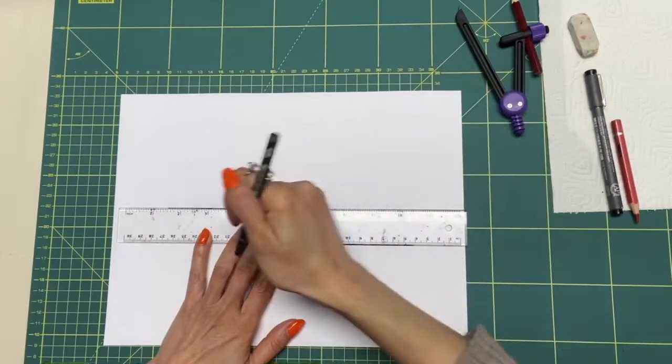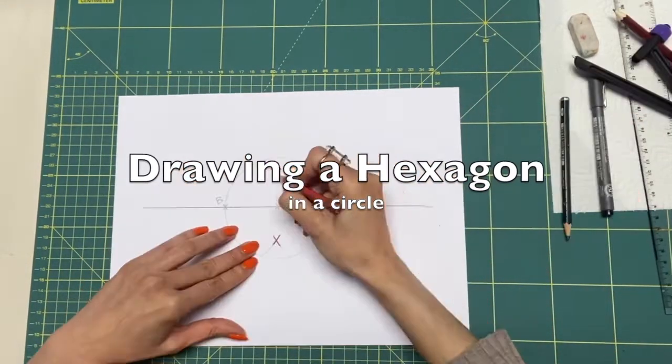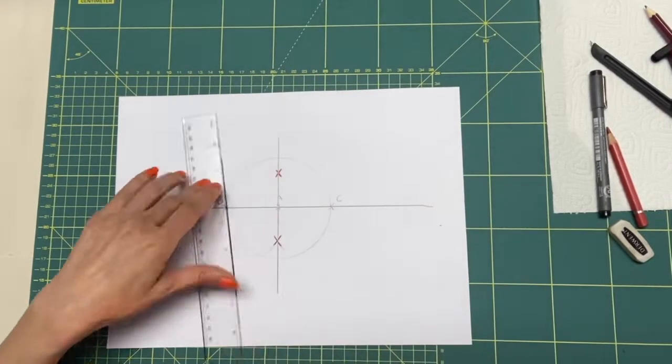Let's draw a hexagon in our circle. We start again the same as the previous parts. A line and a circle divided by four.